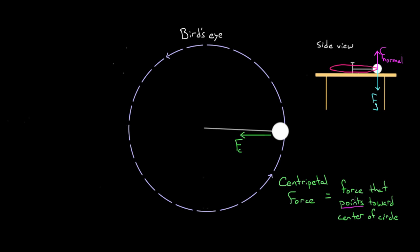The centripetal force is just one of the forces we already know that happens to be pointing toward the center of the circle, and that happens to be causing an object to move in a circle. That's our first big common misconception. In this case, there's a rope tied to this mass — and when a rope pulls, we call that the force of tension. So now we know what kind of force is acting as the centripetal force: it's the tension.